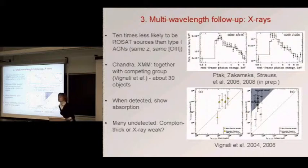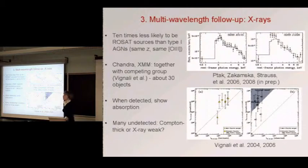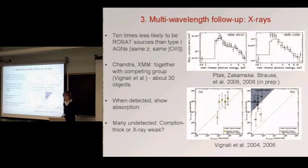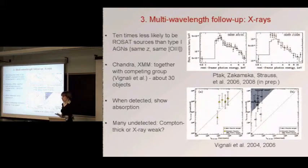Regarding the scattering optical depth: we try to estimate that by assuming we can, from our multi-wavelength observations and the total intensity of the O3 line, estimate the intrinsic luminosity of the quasar even though we can't see it directly. We compare that to what we observe, and we think that roughly 1% of the light from the quasar eventually gets scattered.